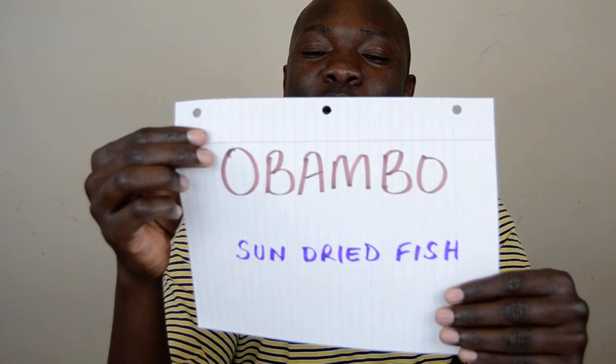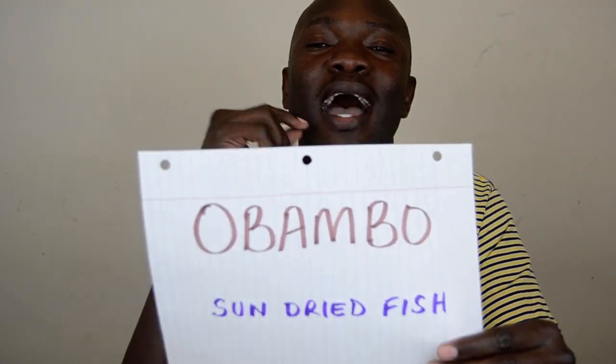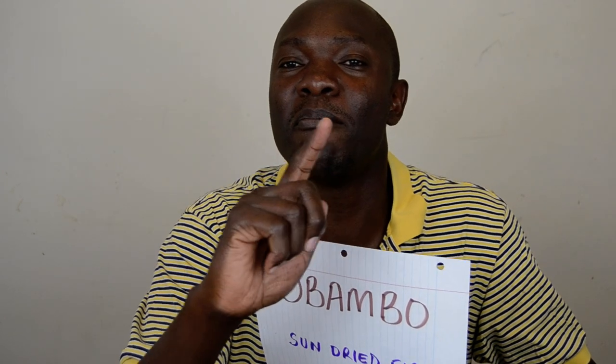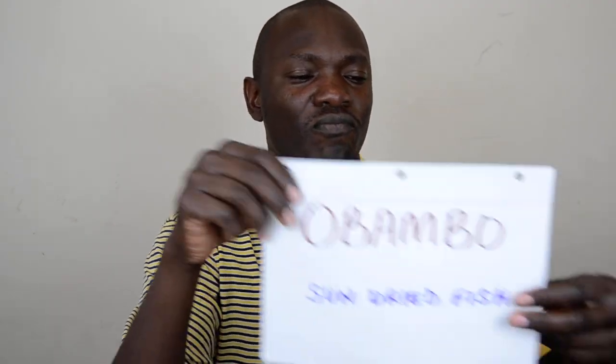And then there is Obambo. Obambo would be tilapia or any fish — we mostly get it from Lake Turkana. It's fish that is sun-dried, and before you eat it you have to thoroughly cook it, put it in water for a long time and cook it for a while. But it's very sweet — sun-dried fish mostly from Lake Turkana.